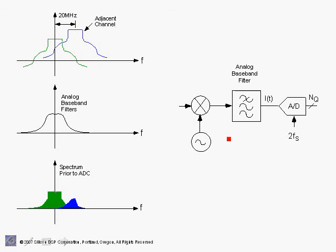A sharper analog filter also implies higher power consumption. It is very difficult to achieve precision and matching between the I and Q channels. So there is great incentive not to implement a high-rejection precision analog baseband filter on the analog side, and instead move that complexity to the baseband digital signal processing side. We are more than happy to trade off analog complexity for digital complexity, taking advantage of large-scale integration in the digital domain.